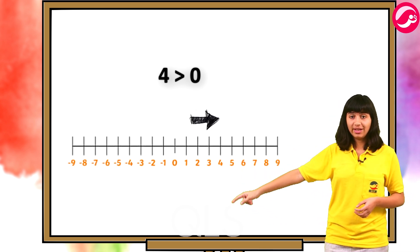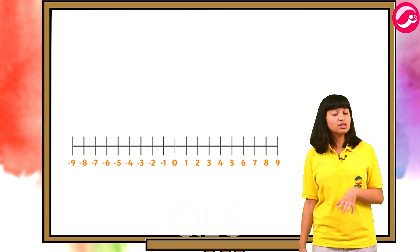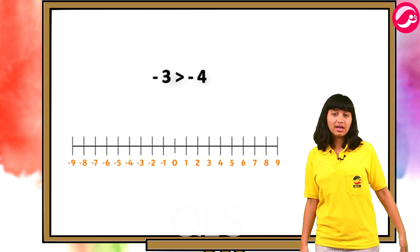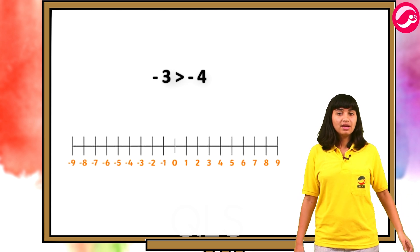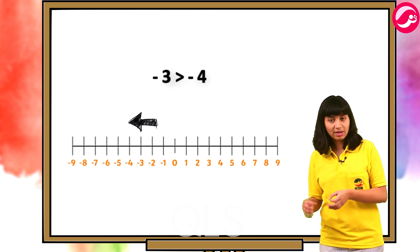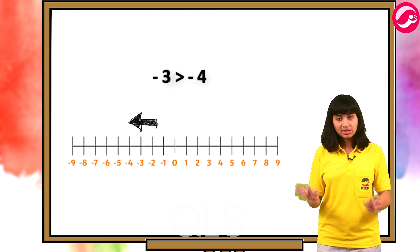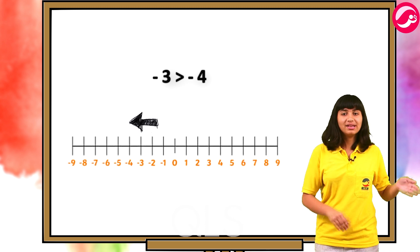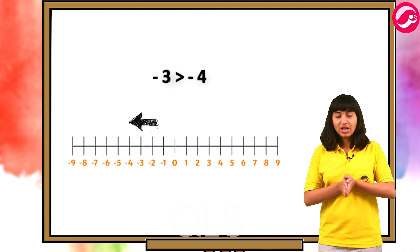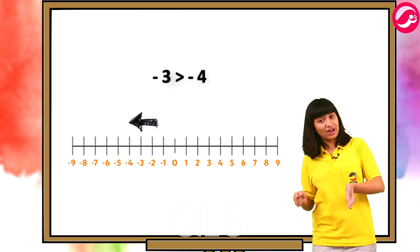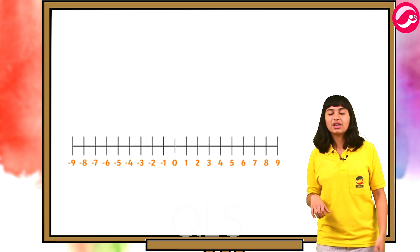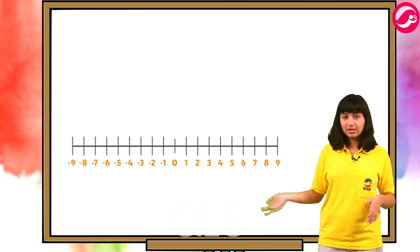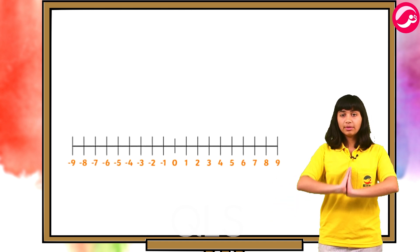Ab integers mein kya khas hai — zara negative numbers ko notice kariye. Minus three jo hai woh minus four ke right mein hai. Sirf three aur four ko dekhein toh four bada hai, lekin minus three aur minus four ko dekhein toh minus three bada hai. Jaise jaise numbers right mein jaate hain waise waise woh bade hote jaate hain — integers mein negative numbers ka order ulta hota hai positive numbers se.